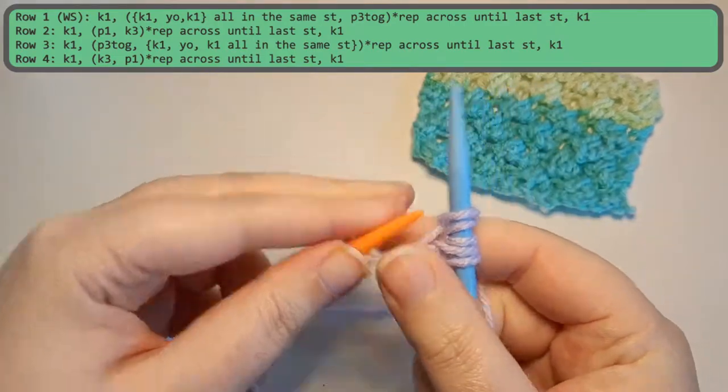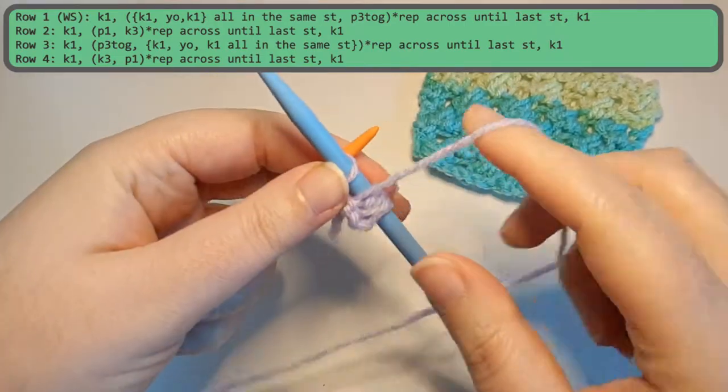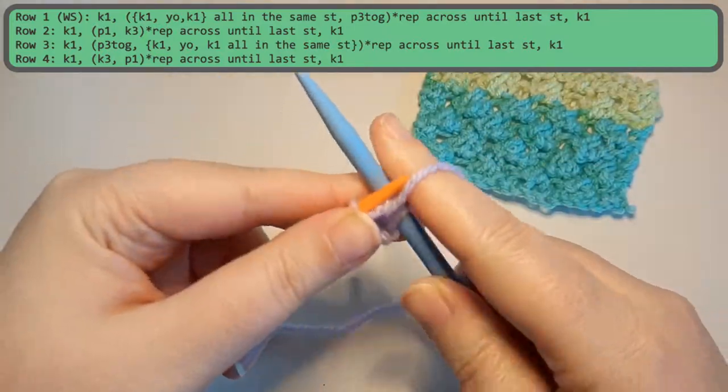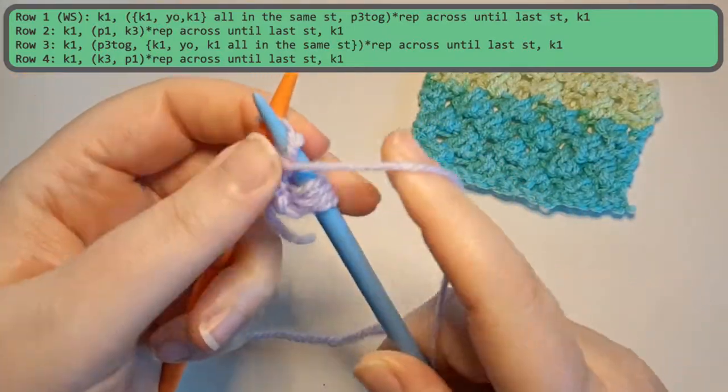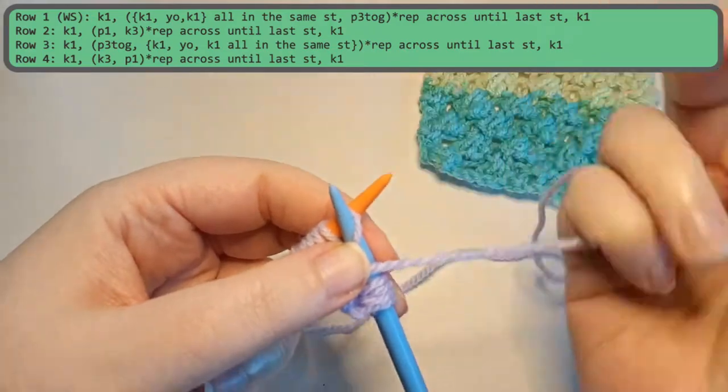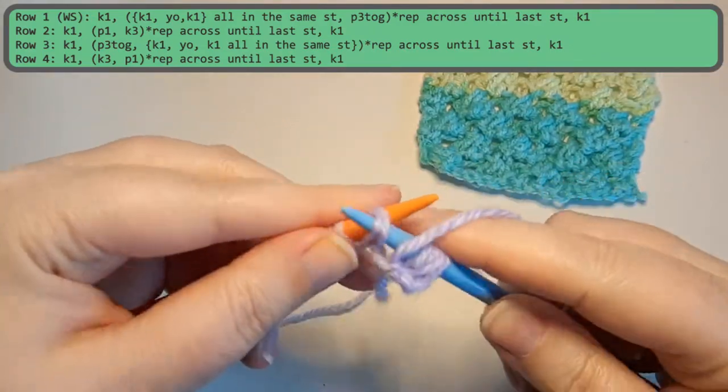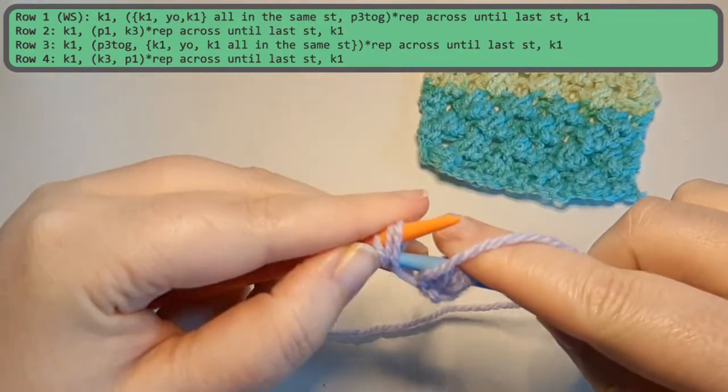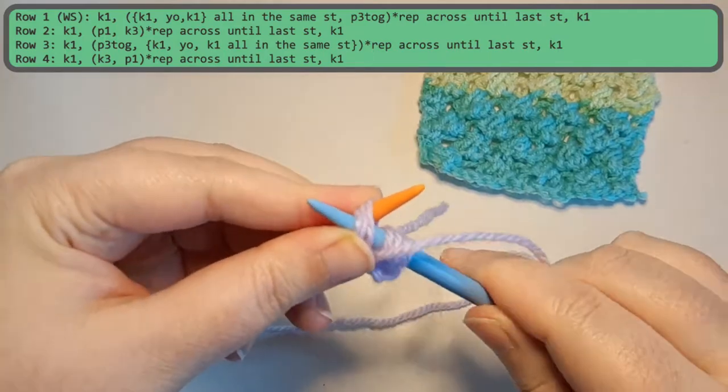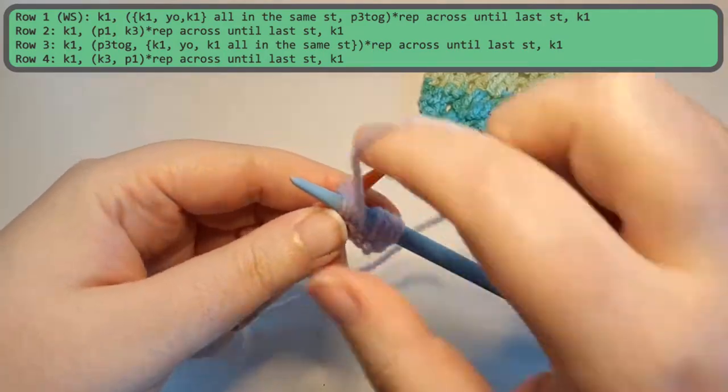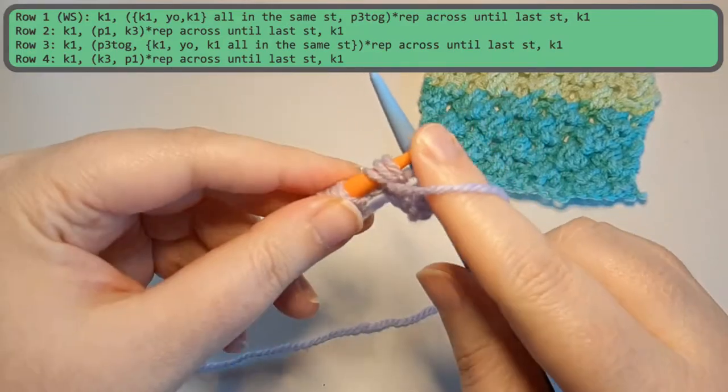Then we are going to purl three together. Which means that you're going to insert your needle through three purls. Not one like I'm doing here. So one, two, three. You got all three loops on your needle. And then you purl through all three, pull through, drop all three.